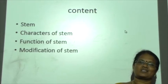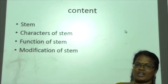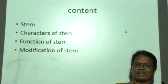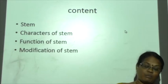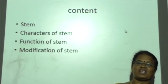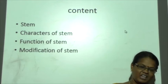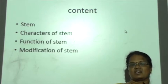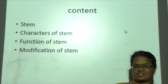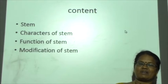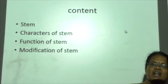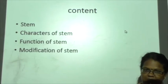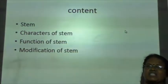There is a lot of confusion between the stem and the shoot. A shoot constitutes leaf, branches, and flowers, whereas a stem is entirely different. The stem is the green ascending part of the plant, which rises from the plumule region of the seed.